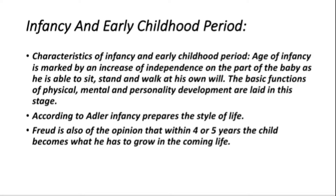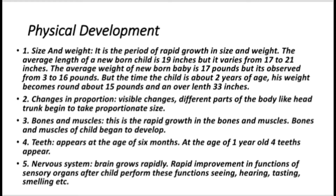Let us look at physical development. First, size and weight: it is a period of rapid growth. The average length of a newborn child is 19 inches, varying from 17 to 21 inches. The average weight of a newborn baby is 7.7 pounds, varying from 3 to 16 pounds. Variability in growth depends on heredity, diet, economic status, order of birth in the family, and other environmental factors. By age 2, the child's weight is around 25 pounds and length about 33 inches. At age 5, the child is 5 times his birth weight.